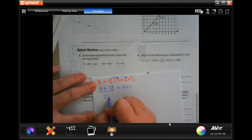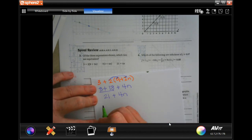Now we're going to combine our like terms and get 21 plus 4n. So that's the first one. The second one says seven times open parenthesis three plus four n close parenthesis.